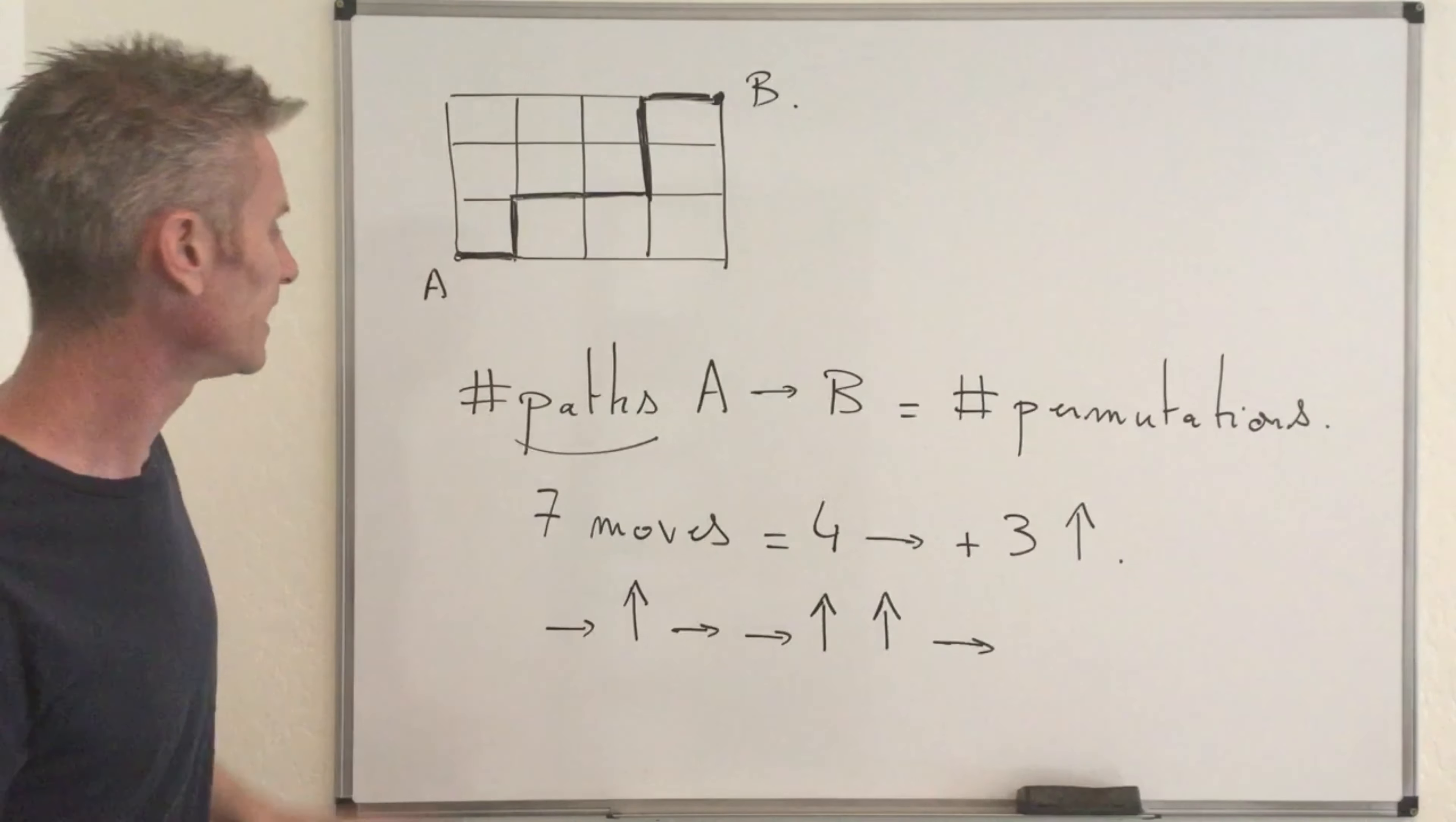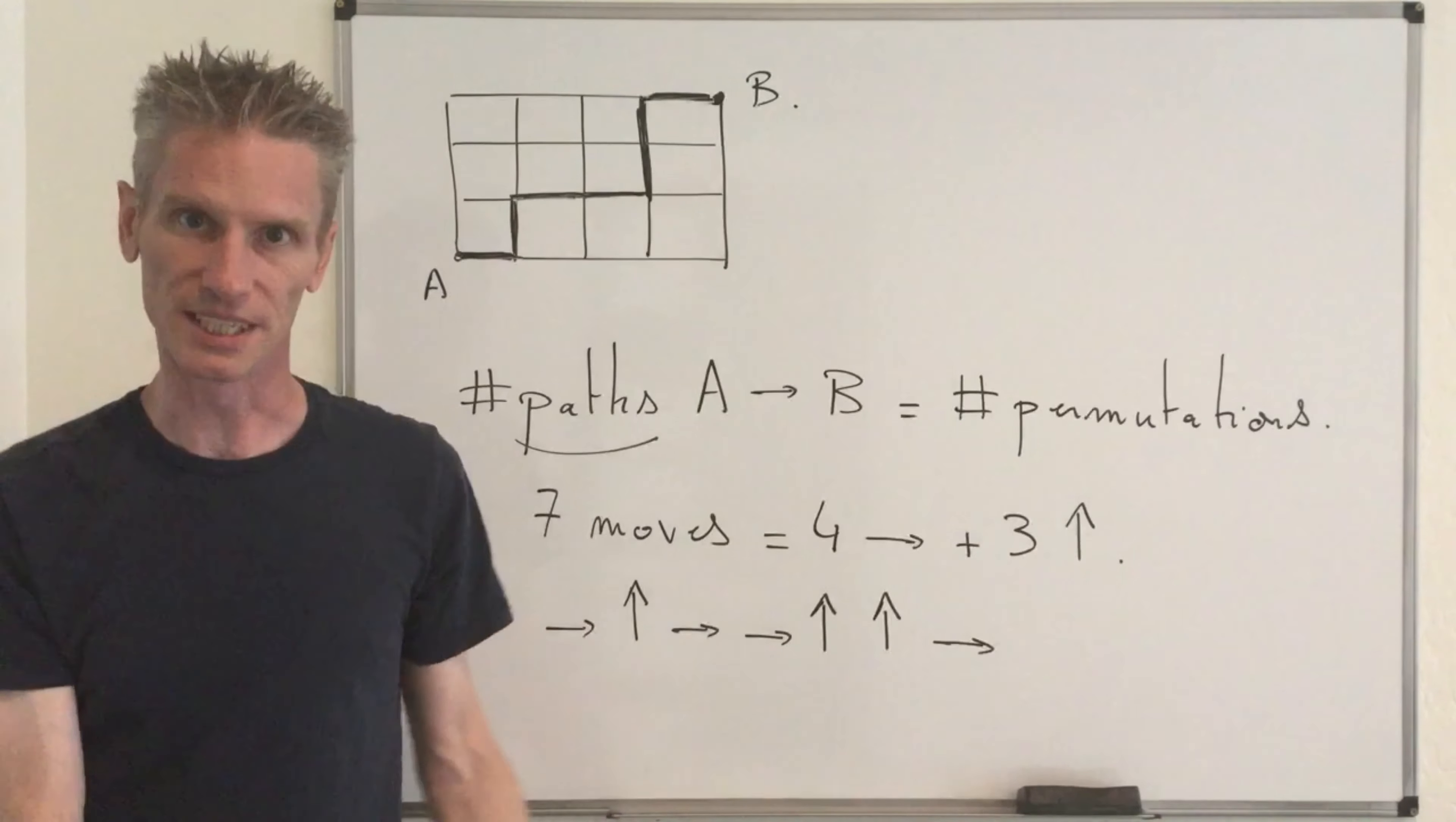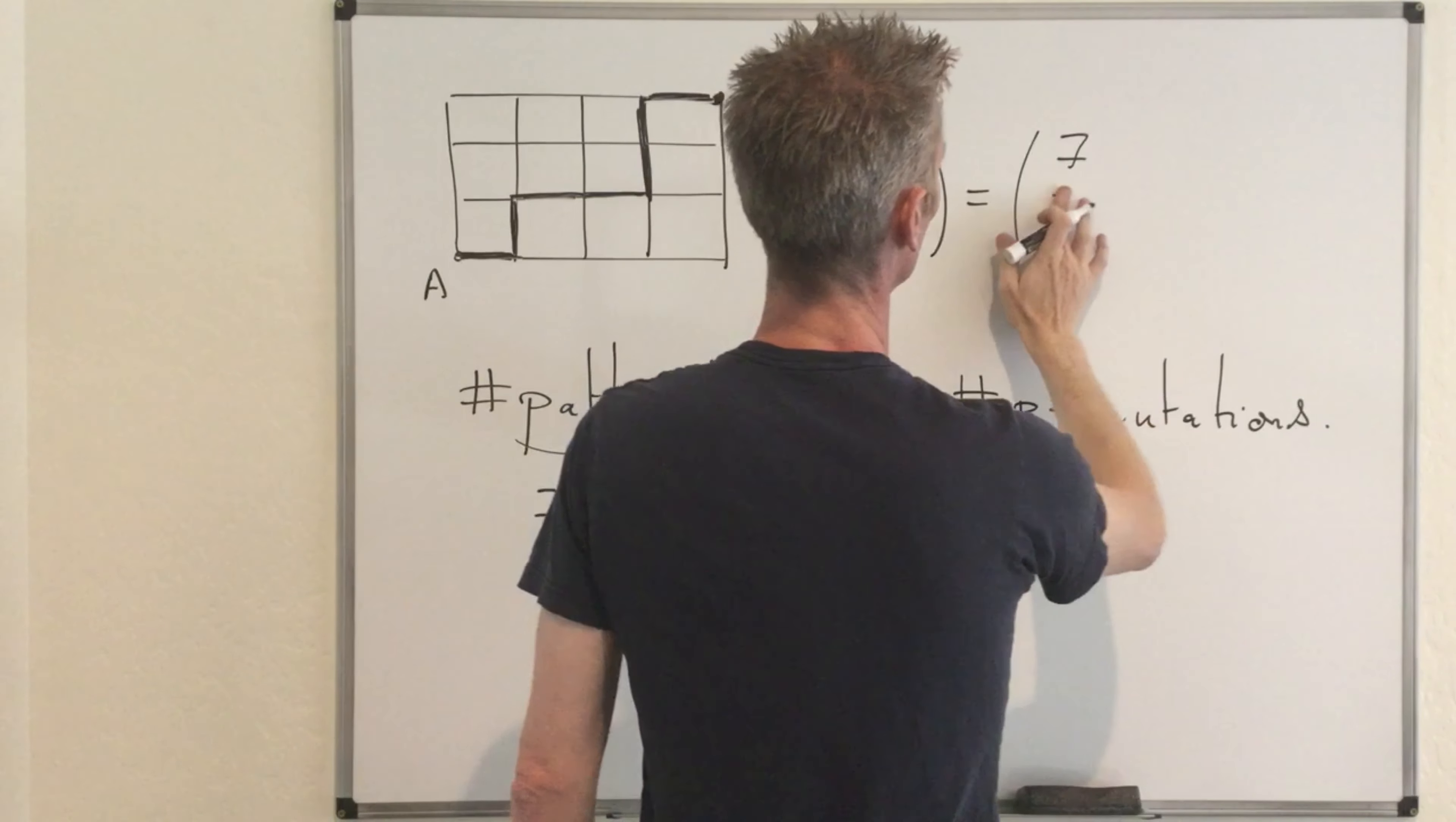What you can do also is just say that from the seven moves, you need to choose four of them where you are going to go right and for the last three, you are going to go up. Or the other way, you can say from the seven moves, I'm going to choose three of them to go up and the other four will be going right, which tells you that the total number of permutations we are looking for, that's also equal to the number of paths going from A to B. If you only move right or up, it's going to be equal to seven choose four, but that's also equal to seven choose three.